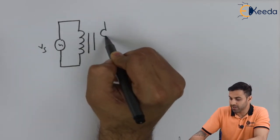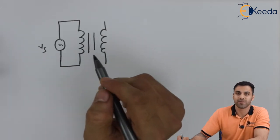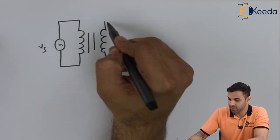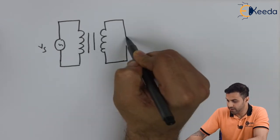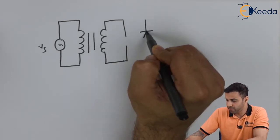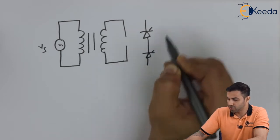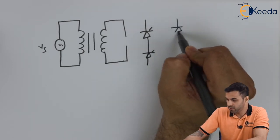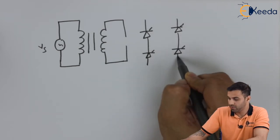And the secondary coil is connected to a bridge rectifier, but the diodes are replaced with the thyristor. Let's say that's a bridge rectifier and I'm connecting four thyristors: thyristor one, thyristor two, thyristor three, and thyristor four.